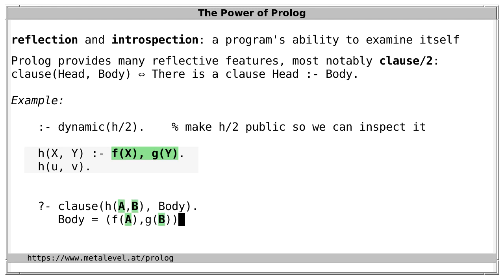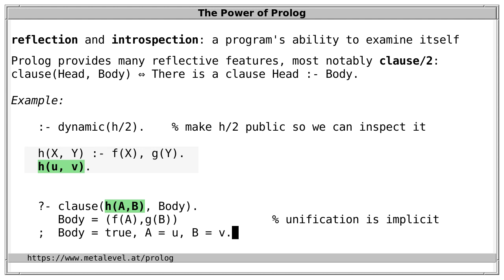We don't get X and Y as in the definition, but A and B, because that's what we used in the query. We can think of 'clause' as an ordinary predicate to query defined clauses. Is there another solution? Yes, because the second clause also matches — it's unifiable with the head in the query. We also get a second answer corresponding to the fact. For facts, the body is the atom true, which is justified because a fact could be written equivalently as 'it's true if the built-in predicate true holds.'